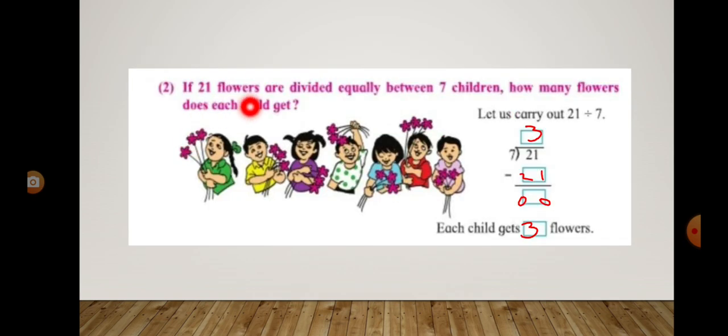If 21 flowers are divided equally between 7 children, how many flowers does each child get? Let us carry out 21 divided by 7. 7 threes are 21. Each child gets 3 flowers.